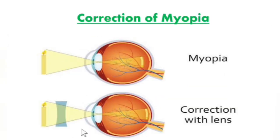So how can myopia be corrected? For the correction of myopia, we use a diverging lens — that is, a concave lens. This diverges the light rays and then focuses them on the retina, so that the myopic defect is corrected, image formation occurs on the retina, and clear vision is restored.